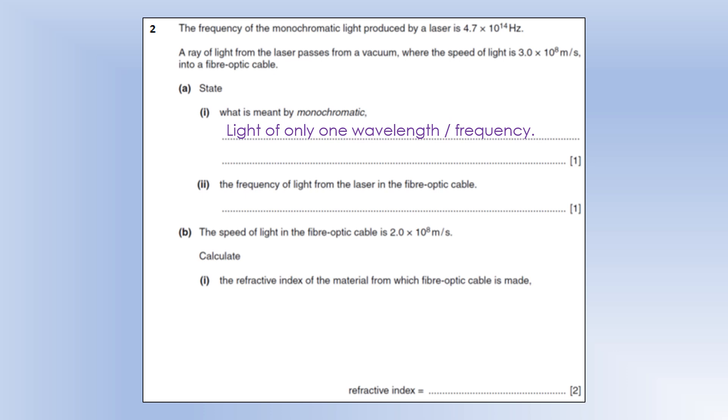So what is the frequency of light in the fiber optic cable? Well it's going to be 4.7 times 10 to the 14. No processes actually change the frequency, so reflection, refraction, diffraction - none of those processes change wave frequency. They can only change speed or wavelength, or at least some of them do.